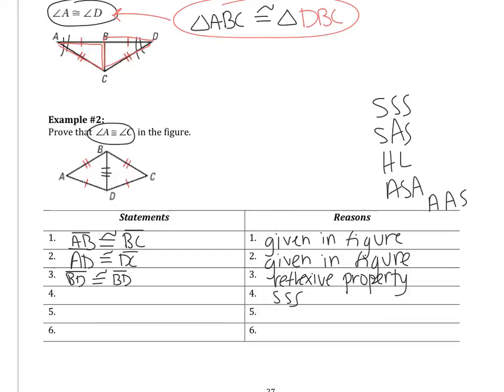So we can say that the triangles are congruent. Being very careful with the congruency statement: triangle ABD is congruent to triangle CBD by SSS. Now that we know the triangles are congruent, we can say that their corresponding parts are congruent. So angle A is congruent to angle C, and the reason is CPCTC — corresponding parts of congruent triangles are congruent.